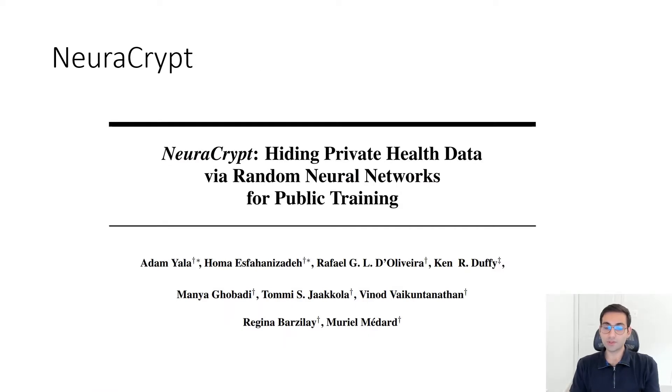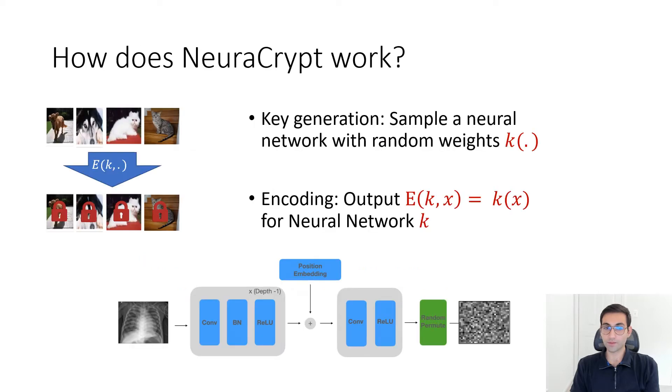NeuroCrypt was a recent proposal that tried to achieve this goal using encoding algorithms that use random neural networks. The encoding algorithm uses random neural networks as keys. The key generation algorithm generates a key by randomly sampling a neural network with random weights. The encoding is simple: given a random neural network and an input X, you just run X on that neural network and the output will be your encoding.